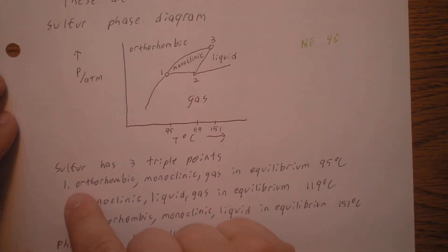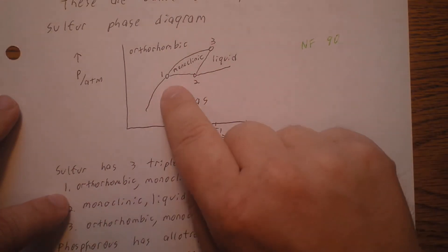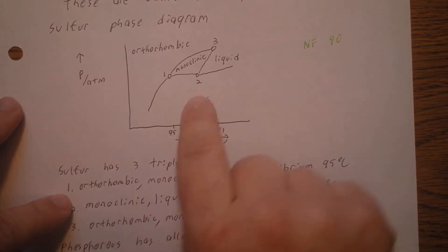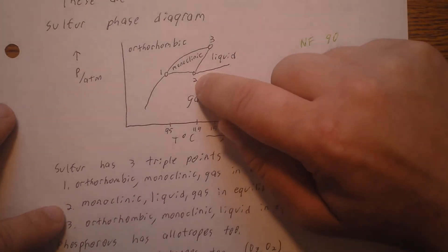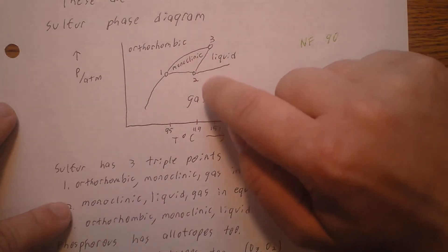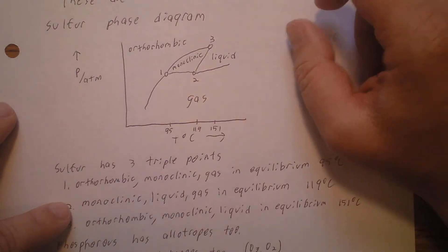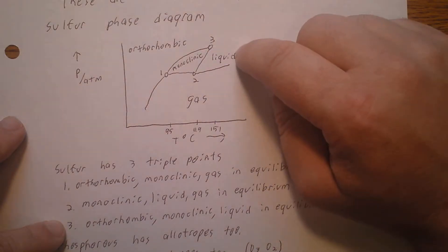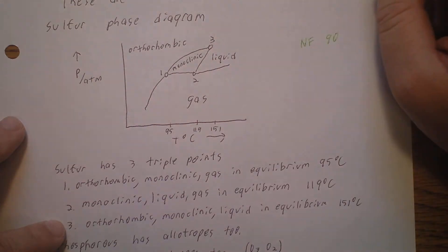You'll notice that sulfur has three triple points. One is where orthorhombic, monoclinic, and gas are in equilibrium at 95 degrees Celsius. Two is where monoclinic, liquid, and gas are in equilibrium at 119 degrees Celsius. And three is where orthorhombic, monoclinic, and liquid are in equilibrium at 151 degrees Celsius.